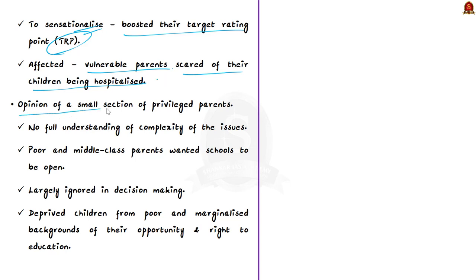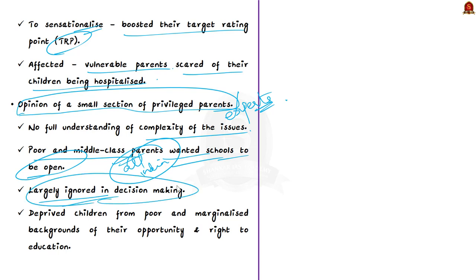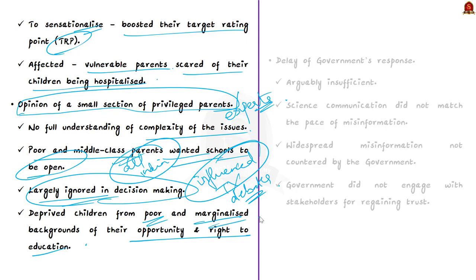The second reason is the opinion of a small section of privileged parents and self-proclaimed representatives of their associations, often without fully understanding the complexity of the issues. Poor and middle-class parents — as indicated in many surveys — wanted schools to be open. However, they were largely ignored in decision-making and influenced through newspaper reports and high-pitched TV debates where only privileged parents and experts spoke, depriving children from poor and marginalized backgrounds of their right to education.